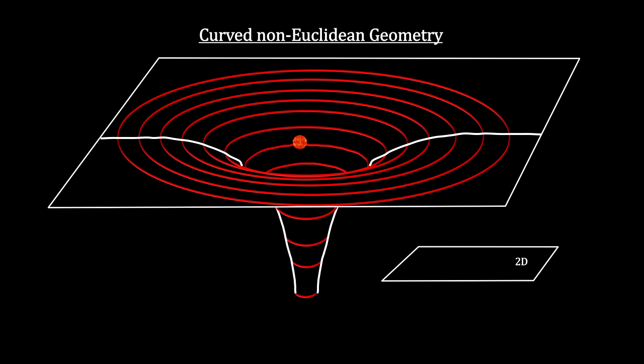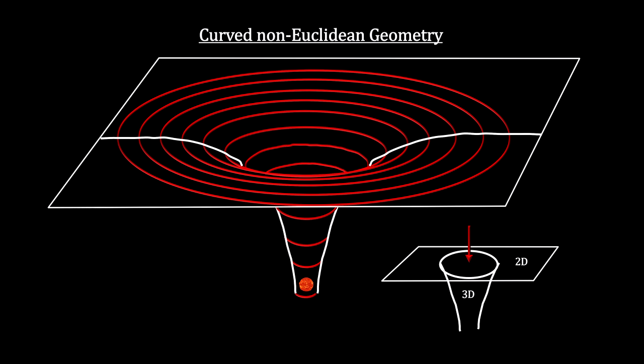But diagrams like this are misleading in two ways. First, they represent an external curvature into another dimension, when in fact we are talking about intrinsic curvature. There is no evidence for the existence of a fourth spatial dimension. Second, it looks like you need a downward force on the object to get it to drop into the hole — that would be gravity — but that's what the lines were supposed to represent. So we'll avoid using this technique as we move on to the bending of light by the Sun.